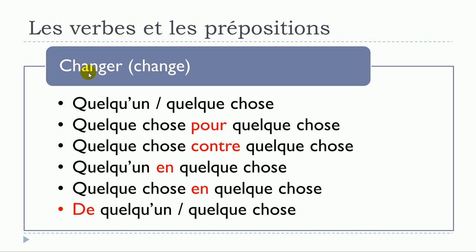The next verb is changer, and it's a bit more tricky. First structure: changer quelqu'un, changer quelque chose — no preposition. Second structure: changer quelque chose pour quelque chose. Third structure: changer quelque chose contre quelque chose. These two structures with pour and contre actually mean the same thing. Then changer quelqu'un en quelque chose, or changer quelque chose en quelque chose. And the last one is changer de quelqu'un or changer de quelque chose.